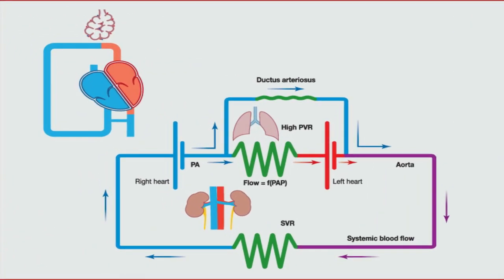Pulmonary hypertension of the newborn is characterized by the presence of an increased pulmonary vascular resistance, associated with shunting of deoxygenated blood from the pulmonary to the systemic circulation, causing severe hypoxemia.